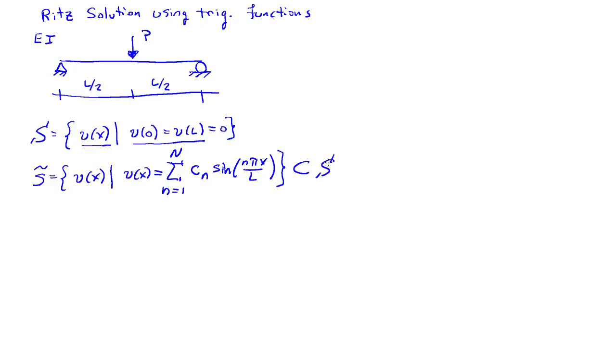Notice that every function in s tilde satisfies the boundary conditions at x equals 0 and x equals l. So we're going to need the potential energy for our system. The potential energy is composed of the strain energy of bending, so 1 half eI v double prime squared dx